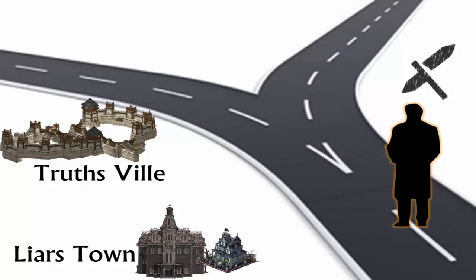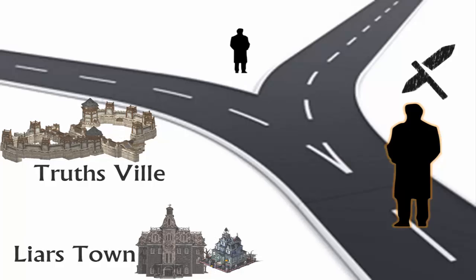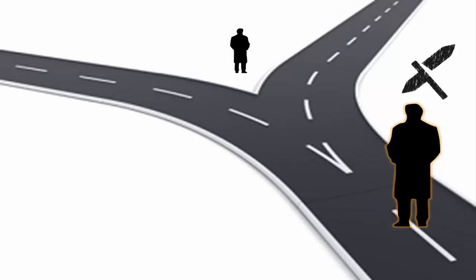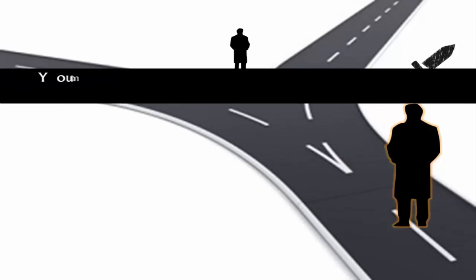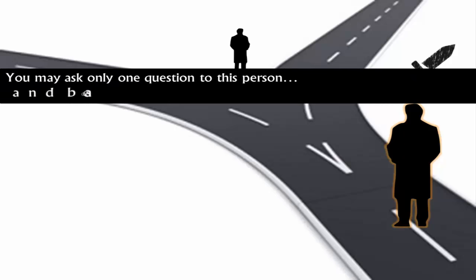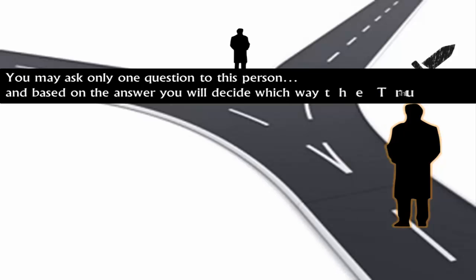But the signboard is broken and you don't know which way to go. The good thing is there is a resident at the junction whom you can ask a question, but you don't know which place he belongs to — whether he belongs to Truthsville or Liar Town. You are allowed to ask only one question, and based on his answer you will decide which way Truthsville is.